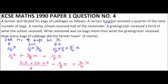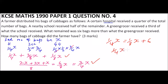We are told that what remained is six bags more than what the green grocer received. Since three quarters was distributed, what remained is one quarter X. So we set up: one quarter X equals one over eight X plus six. Bringing like terms together: one quarter X minus one over eight X equals six, which is the same as two X minus X over eight equals six, giving one over eight X equals six.